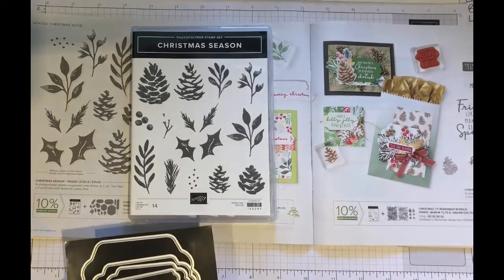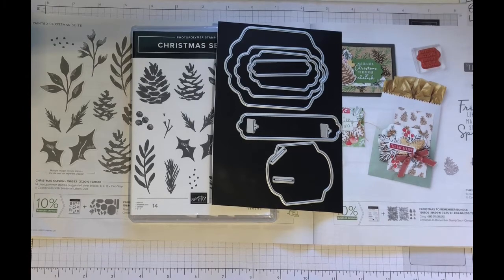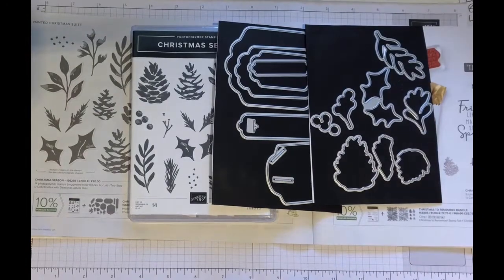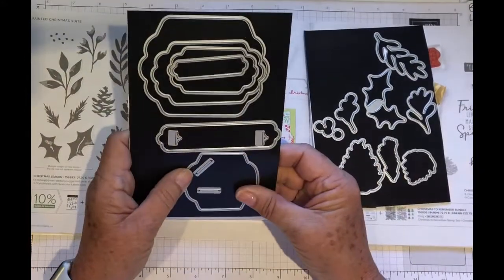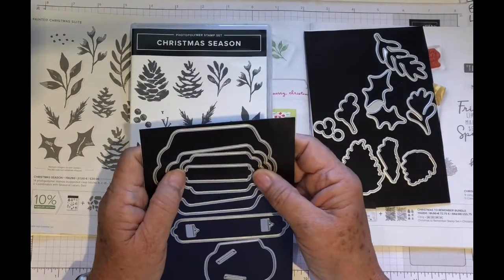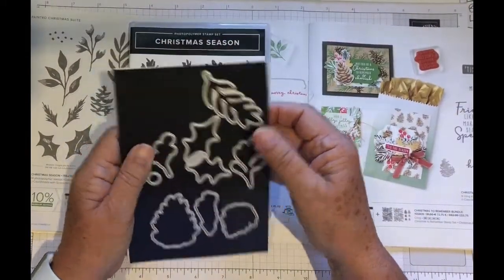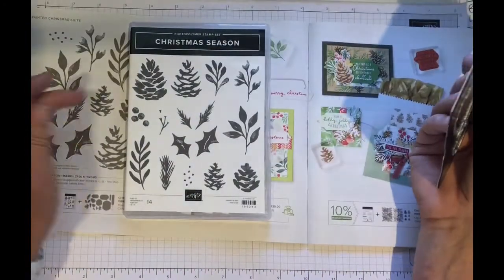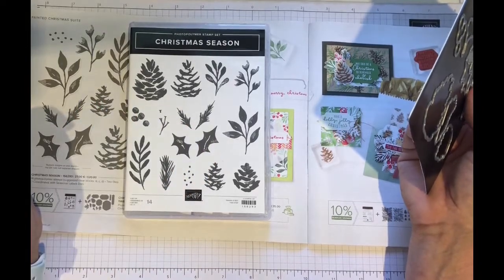I think this is a lovely stamp set and dies as it can go through the year rather than just Christmas. If you actually look at the stamps, there's only the holly that you wouldn't be able to use all year round. And the labels, the label dies, all the labels on the left, you will use all year round. And the flower leaf dies, again, you will use apart from the holly.